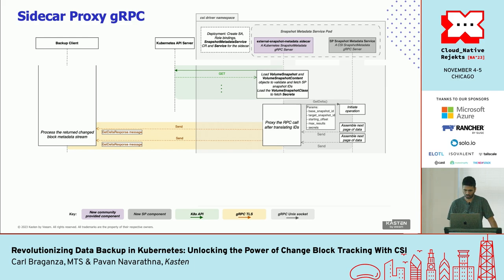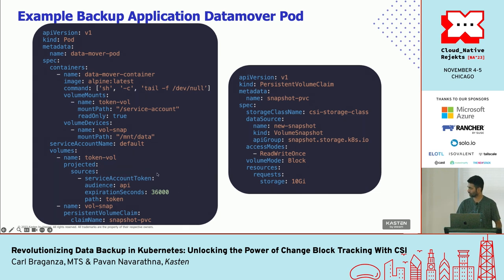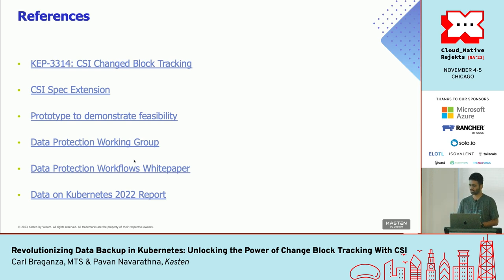We had a couple of slides to show an example of how the backup application would use this. The pod mounts the volume device — the block volume PVC created from the snapshot itself — and also the service account token obtained from the API server. This is how a backup application would retrieve the change block data and finally store it. There are references available; we'll share the slides so you can look for more details on the KEP, the white paper, and other resources. Feel free to reach out to us and we'll be happy to answer questions.